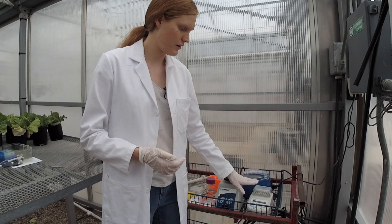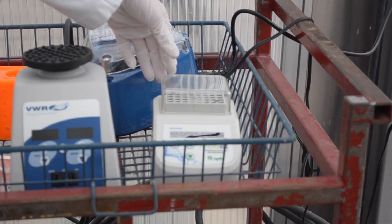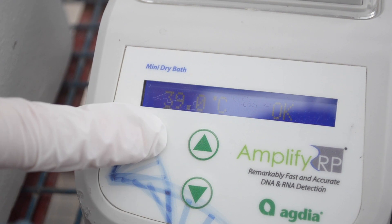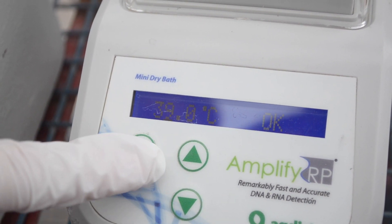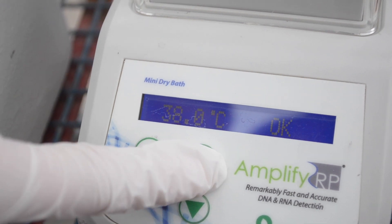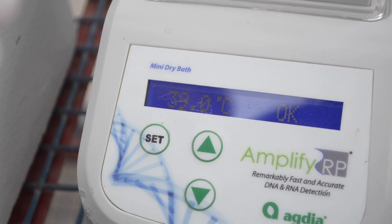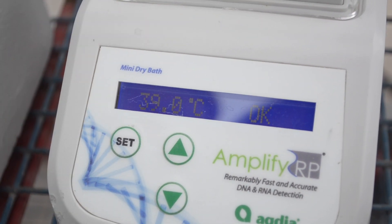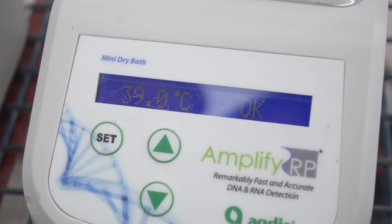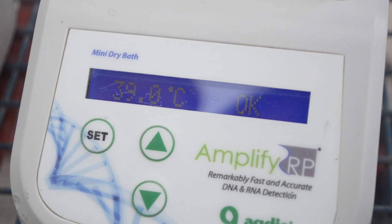We'll set our heat block to 39 degrees Celsius. Switch on the power in the back and hit the set button. We don't want to change the first digit, so we'll hit the set button again to edit the second digit and use the arrows to change the value. We hit the set button to move to the third digit and use the arrows to change the value again. Once we have the temperature we want, we leave it alone and go mix our reagents.